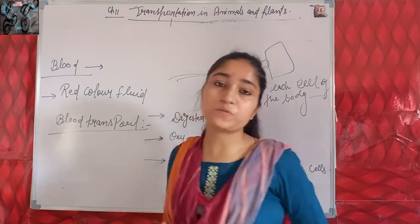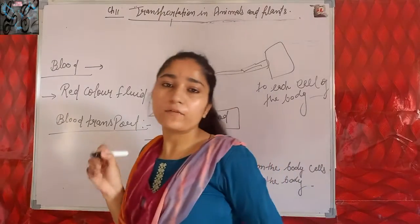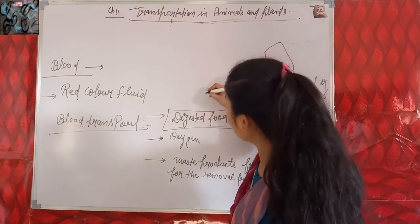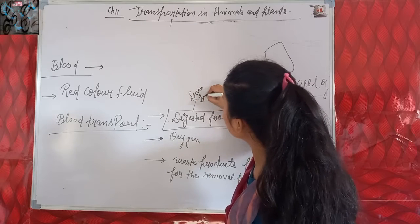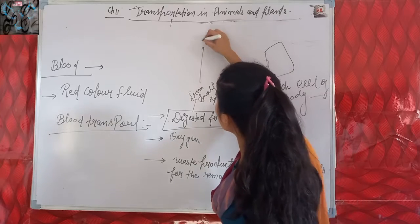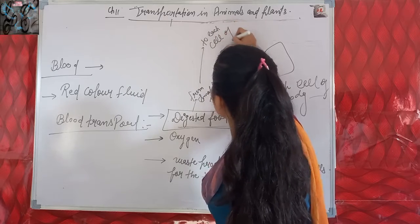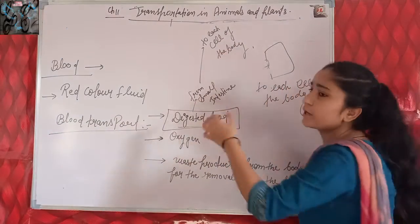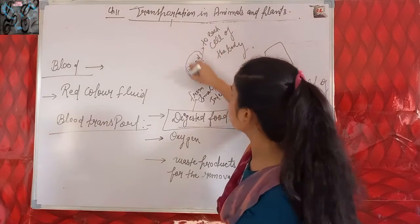Blood transports digested food. Where does our food get digested? Our food is digested in the small intestine. Blood transports digested food from the small intestine to each cell of the body. So digested food gets transported to each cell of the body with the help of blood.